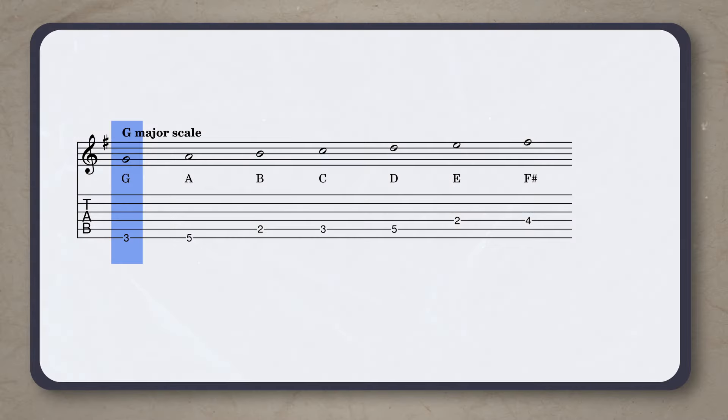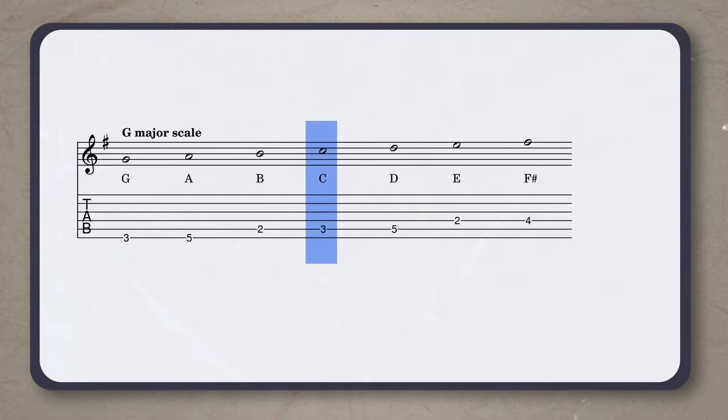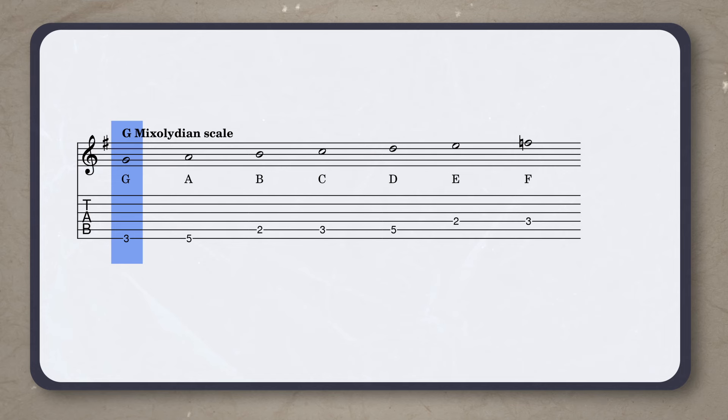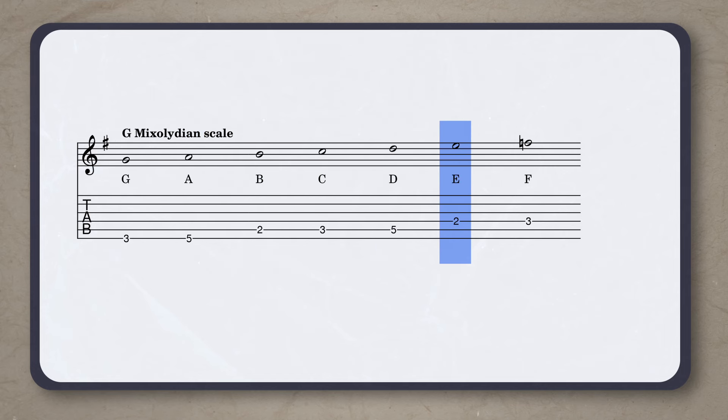During the chorus, John Lennon changes the sound. The first two rounds use harmonies from G mixolydian. This is essentially a more powerful sounding version of the G major scale. The difference is that the G major scale has a major 7th, which is F sharp, whereas the G mixolydian scale has a minor 7th, which is F natural.